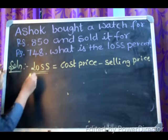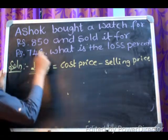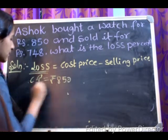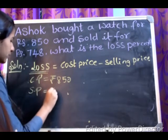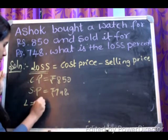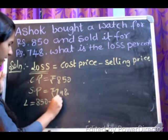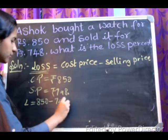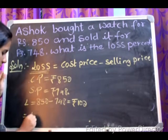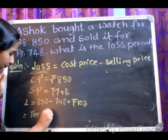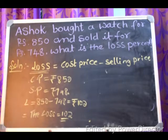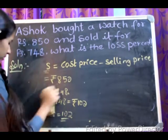The loss is equal to cost price minus selling price. The cost price is rupees 850 and the selling price is rupees 748. So loss is equal to 850 minus 748, which gives us rupees 102.